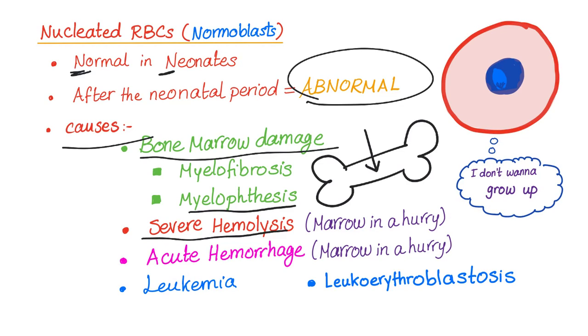Severe hemolysis is another cause. Because in hemolysis, your red blood cells are being destroyed, the bone marrow is working like crazy to produce more red blood cells and it doesn't care if the cell is immature — it just pushes them out to bring more cells into circulation.